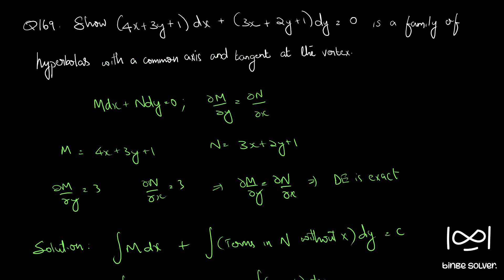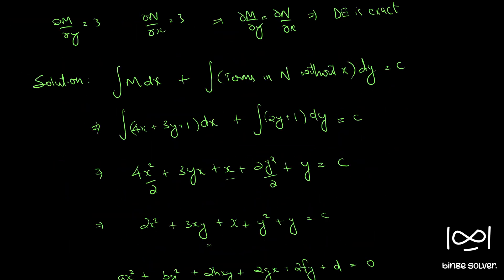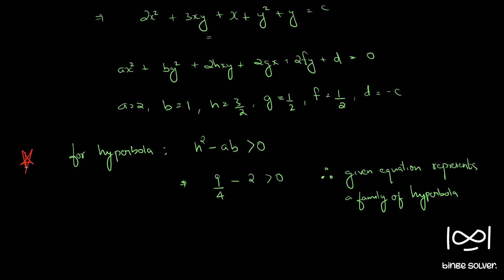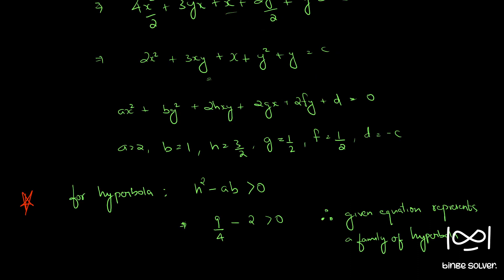This is the solution to question number 169. Since this uses a different concept, I'm going to mark this as an important question. When revising, we should make sure we don't miss this one. The key concept is that h squared minus ab greater than 0 is the condition for a hyperbola — if we don't know this condition, we will not be able to solve this question.